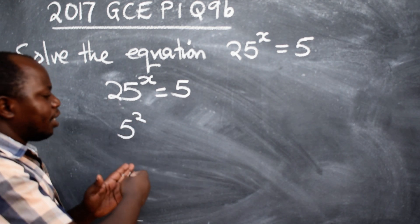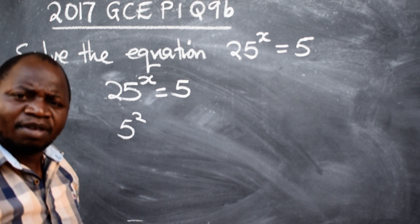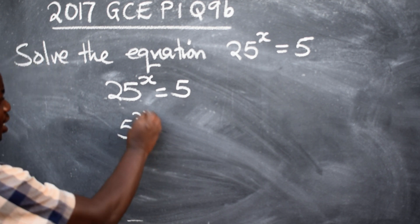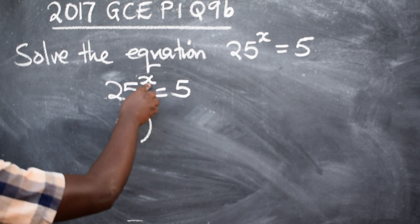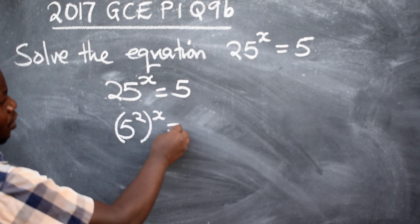5 to the power 2 is 25, because that will be 5 times 5. Then, we put this in brackets, raised to the power x is equal to 5.